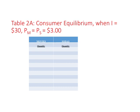Suppose the income of this person is $30, represented by I. The price of a movie (PM) equals the price of sodas (PS), and each is priced at $3. Based on this financial reality — income = $30, price of a movie = price of sodas = $3 — what consumption choices does this person have? For example, if this person decides to buy no movies, what is the maximum quantity of sodas this person could buy?